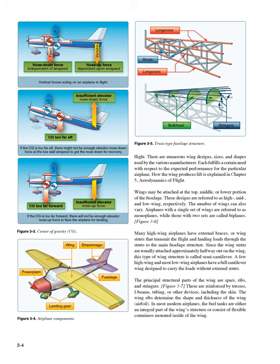The number of wings can also vary. Airplanes with a single set of wings are referred to as monoplanes, while those with two sets are called biplanes. Many high-wing airplanes have external braces, or wing struts, that transmit the flight and landing loads through the struts to the main fuselage structure. Since the wing struts are usually attached approximately halfway out on the wing, this type of wing structure is called semi-cantilever. A few high-wing and most low-wing airplanes have a full cantilever wing designed to carry the loads without external struts. The principal structural parts of the wing are spars, ribs, and stringers.